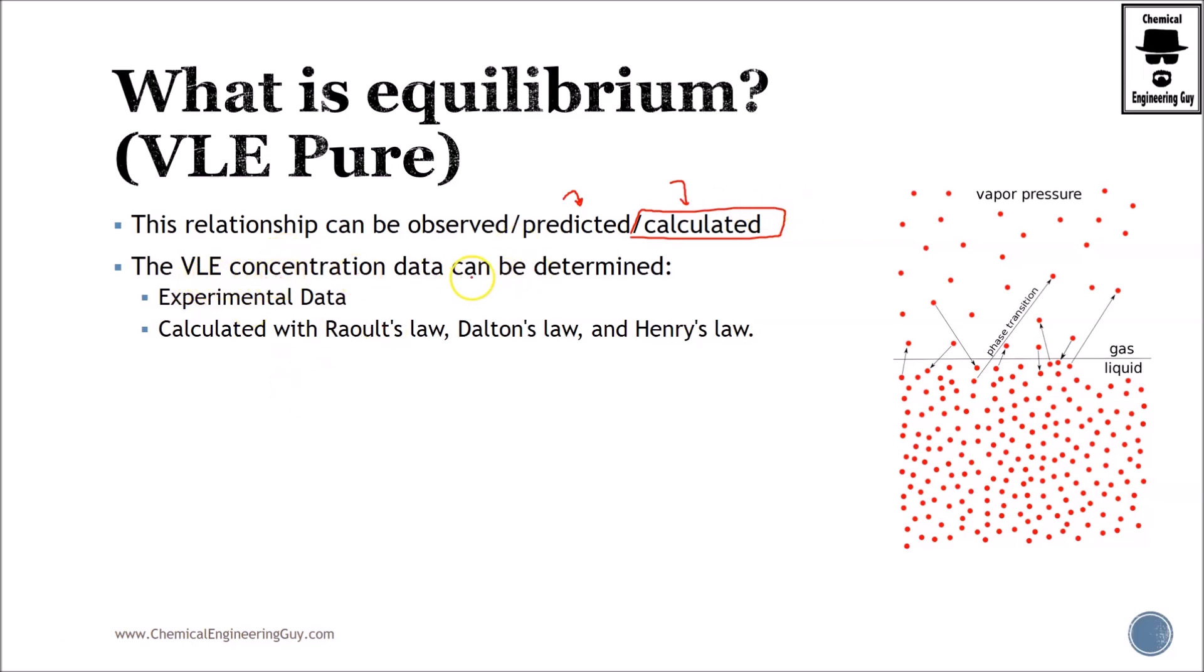The vapor-liquid equilibrium concentration can be determined via experimentation or what we're going to be doing via calculation with Raoult's law, Dalton's law, and Henry's law.